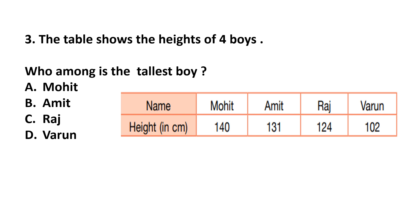Question 3: The table shows the height of four boys. Who is the tallest? We find the maximum height in the list. Mohit has the greatest height, so Mohit is the tallest. Answer: option A.